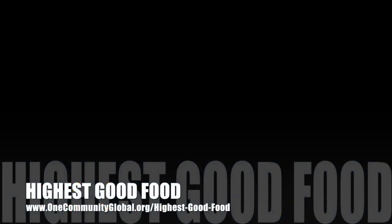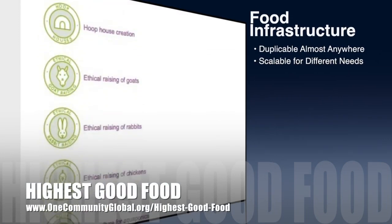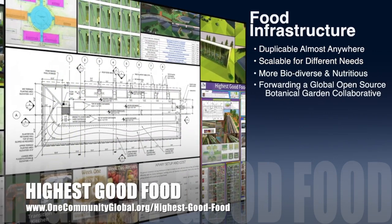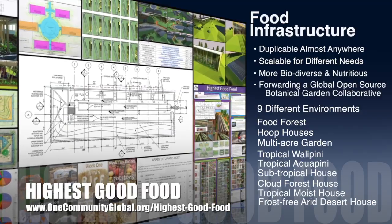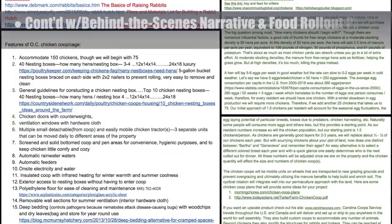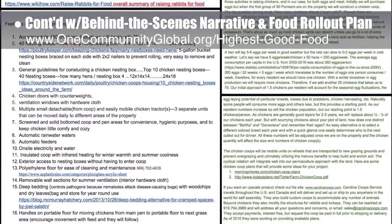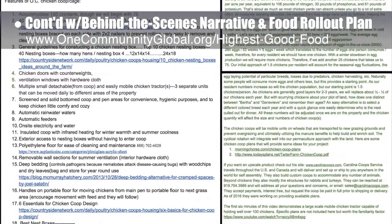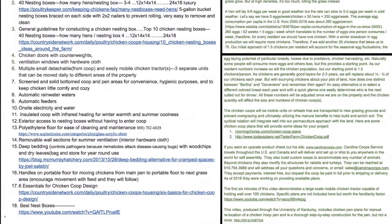One Community's approach to highest good food is duplicable almost anywhere, scalable for different needs, more biodiverse and nutritious, part of forwarding a global open-source botanical garden collaborative, and includes nine different free-shared and duplicable growing environments. This week, the core team continued writing the behind-the-scenes narrative and the detailed food rollout plan for the various stages of development. We completed working on rabbits, revisited researching commercial chicken coops, and created a list of chicken nesting box and deep litter and bedding features.